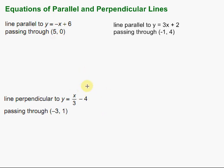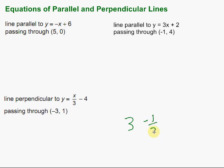For a perpendicular line, the slope is the opposite reciprocal. So the opposite reciprocal of a number — say we have 3 — the opposite reciprocal would be negative one third.